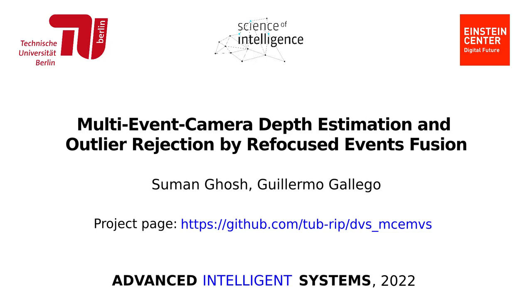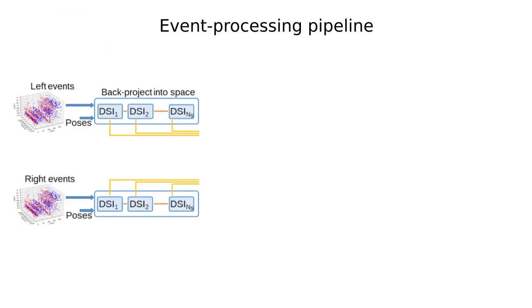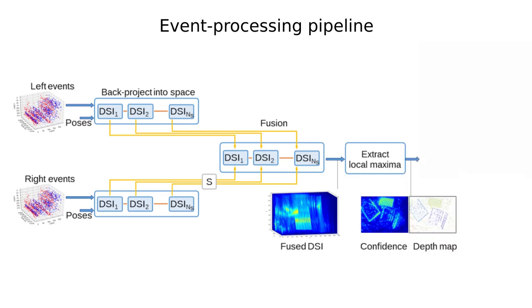Welcome to our paper on event-based stereo depth estimation. Our event processing pipeline comprises several steps: event back projection, disparity space image fusion, and depth extraction via maximization.